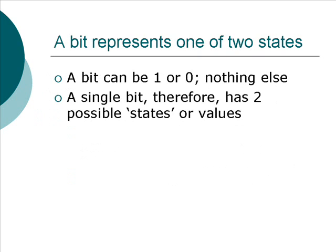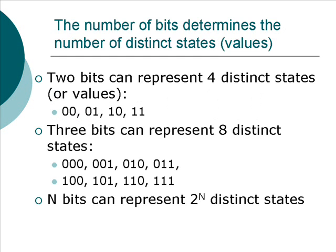Now, a bit can be either a 0 or a 1, and nothing else. A single bit, therefore, has 2 possible states, or values. The number of bits determines the number of distinct states that those bits can represent. So, 2 bits can represent 4 distinct states.